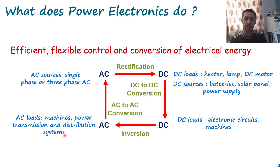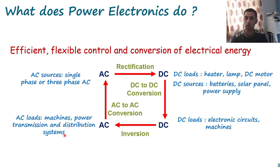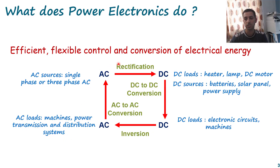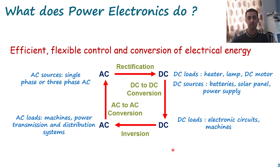We can also convert AC to AC. Why? Because we want to control an AC machine or AC lights from another AC source. To control it, you have to deliver maybe higher or lower power or energy. One of the examples is the dimmer — you control your lights by a dimmer, which is AC to AC, but we are controlling the delivery. So these are some examples of power electronics devices and converters, and you should be aware of all of these to be a good power electronics engineer.